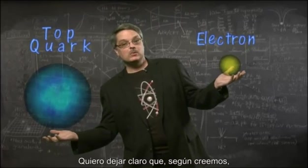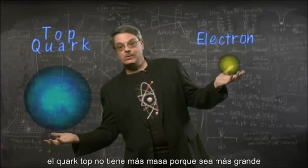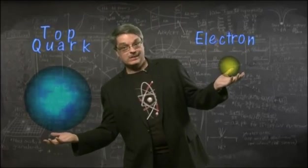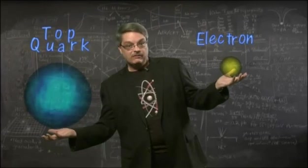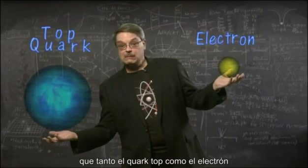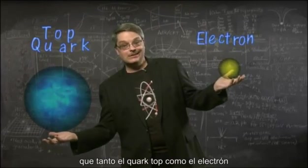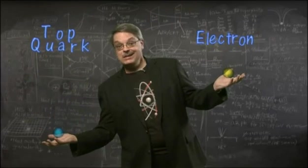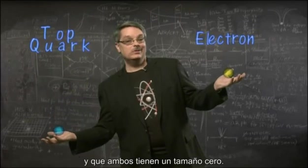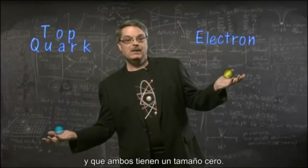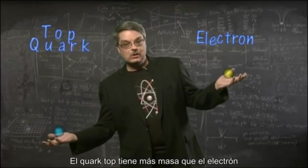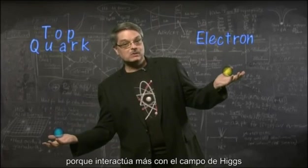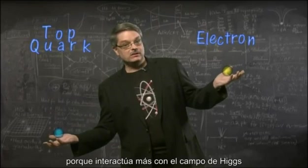I'd like to stress that we believe the top quark is not more massive because it's bigger. It's not. In fact, we believe that both the top quark and the electron are exactly the same size — indeed, they both have zero size. The top quark is more massive than the electron simply because it interacts more with the Higgs field.